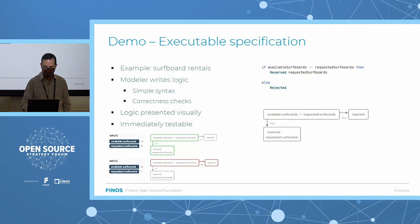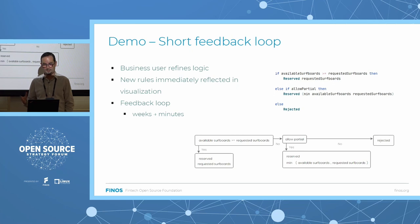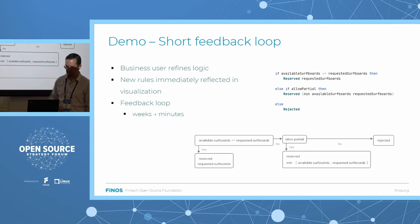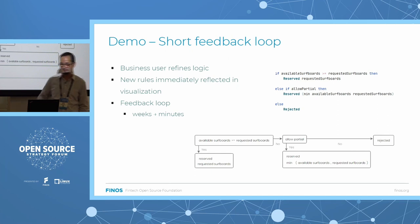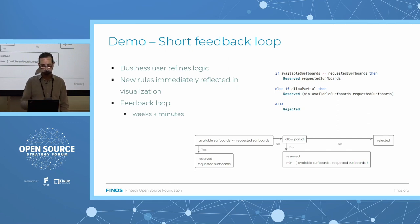So what happened is we basically shortened the feedback loop extremely. Normally to get that kind of feedback on business logic takes at least weeks — you need to put the business logic into an actual system, deploy it, and then business users can interact with it and realize you need changes. That got decreased from weeks to minutes, which is a significant advantage.